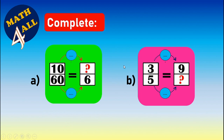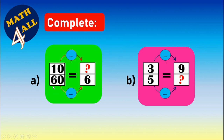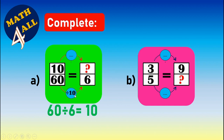Complete the next example with a missing numerator. Step one: divide the two opposite numbers — sixty divided by six equals ten, so I will use ten in the rule. Step two: here we are decreasing, so I will divide by ten. Sixty divided by ten equals six. Whatever I do to the bottom I do to the top: ten divided by ten equals one. So the missing numerator is one.